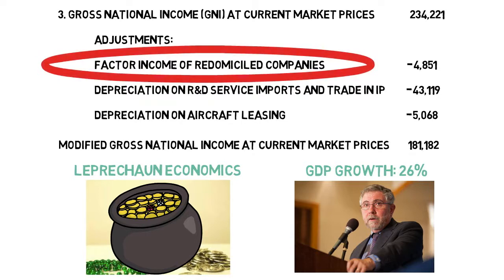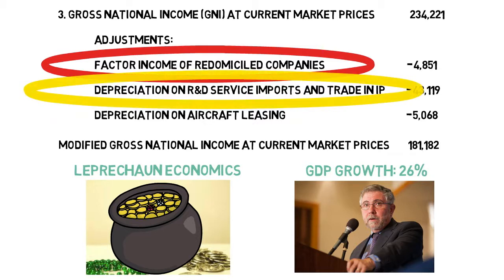The first adjustment is for re-domiciled — or inverted — companies. A US company might set up a headquarters in Ireland, so its US headquarters becomes a subsidiary. The money from profits is then brought back to the Irish parent company for lower tax purposes, which increases Ireland's GDP figure.